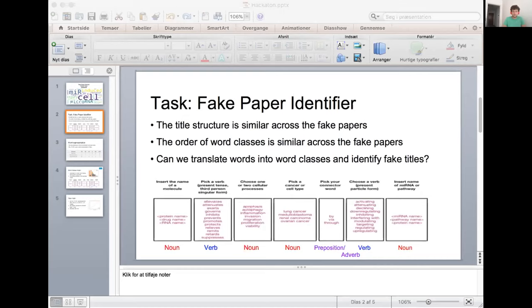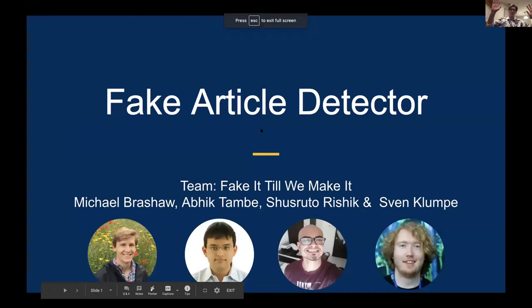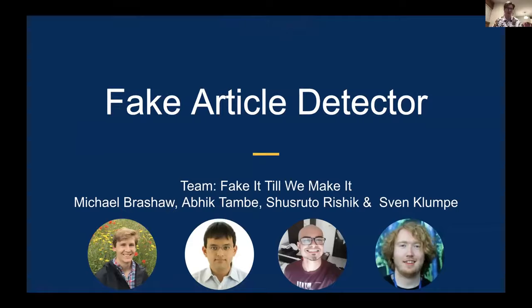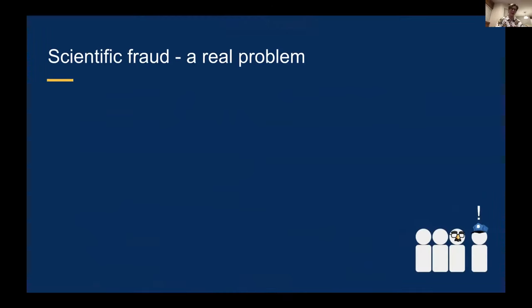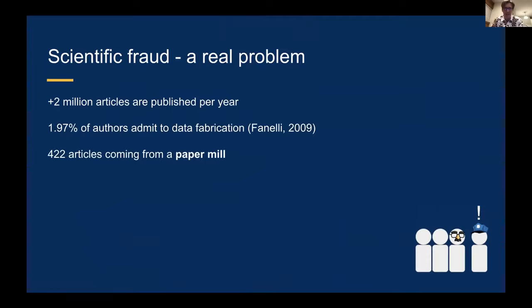Thank you guys — next up we have Fake It Till You Make It, and after that we're going to have Bio Craw Craw. Alright, everybody — we are Fake It Till You Make It and we were working on the fake article detector. Every year there are two million articles published within the sciences. A little known fact is that about two percent of authors within the life sciences alone admit to faking their data or fabricating it in some way. Additionally, in the past couple months about 400-ish articles were found all related to a paper mill in China.